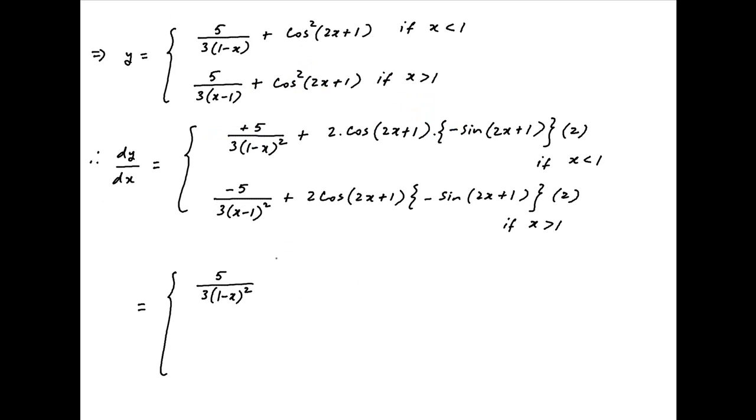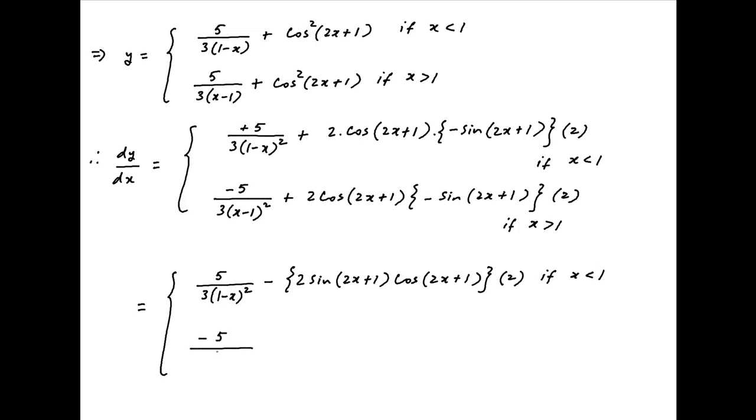This simplifies to: 5/3·(1-x)² − 2·sin(2x+1)·cos(2x+1)·2 if x is less than 1, and −5/3·(x-1)² − 2·sin(2x+1)·cos(2x+1)·2 if x is greater than 1.